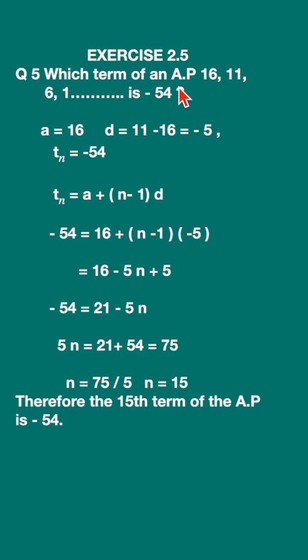They have given us the AP and the nth term as -54. We have to find the value of n. We don't know which term it is, but we know the value of that term is -54. So let's write down the values.